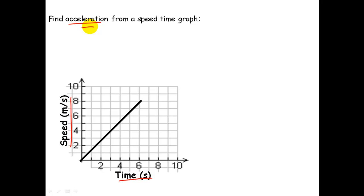To find the acceleration from the speed-time graph, we need to find the gradient of the graph, which will be the change in speed divided by the time it took to change that speed. Think about when you're watching Top Gear and they say this Bugatti Veyron does 0 to 60 in 2.8 seconds — that's a measure of acceleration. So here, acceleration is the change in velocity (change in y) divided by the time (change in x). It's a gradient question.